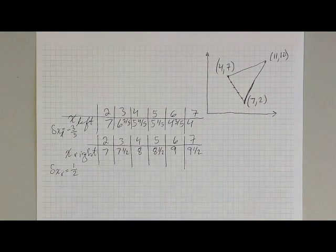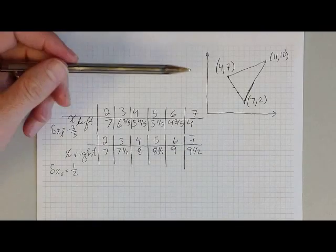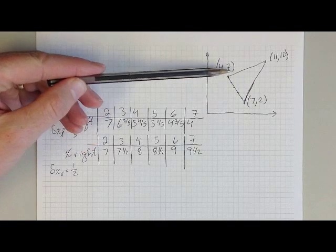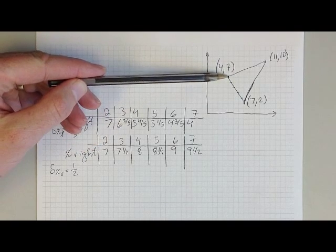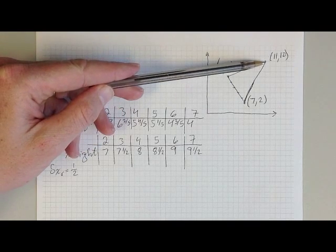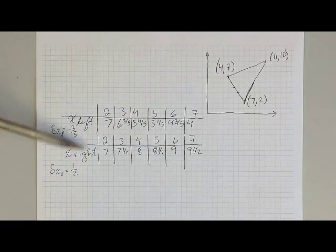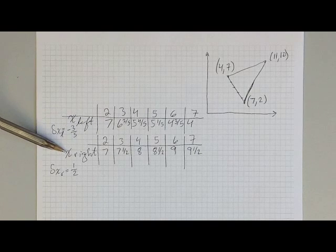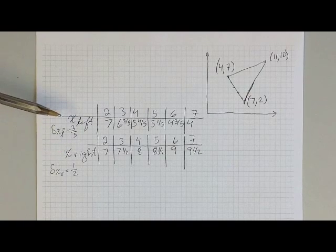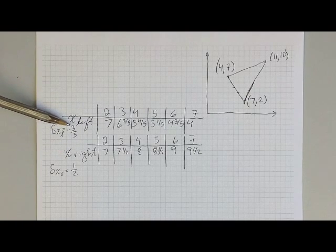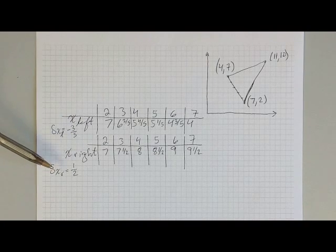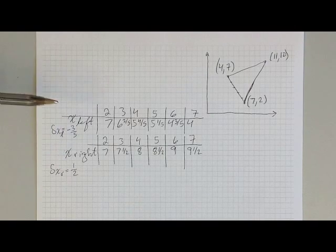We'll return to our original triangle — the same triangle as before, with the bottom vertex at 7,2, middle vertex at 4,7, and top vertex at 11,10. I've already filled in the table of the values of x on the left and x on the right. In the previous video, we computed delta x on the left to be negative 3 fifths, and delta x on the right to be 1 half.